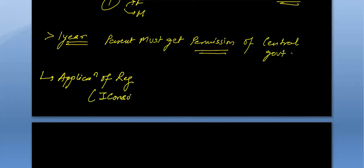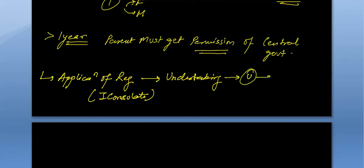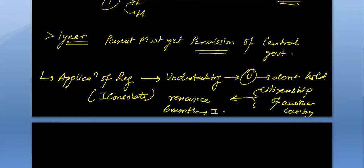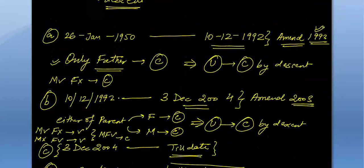With the application of registration which the parents provide to the Indian consulate, they also have to give an undertaking that you do not hold citizenship of another country. If you hold citizenship of another country, then you have to renounce that citizenship within six months, else your Indian citizenship will be cancelled.